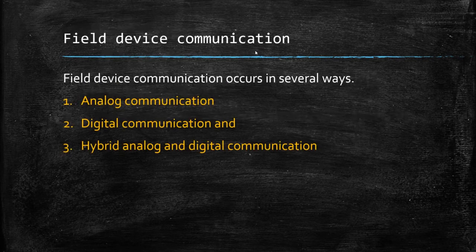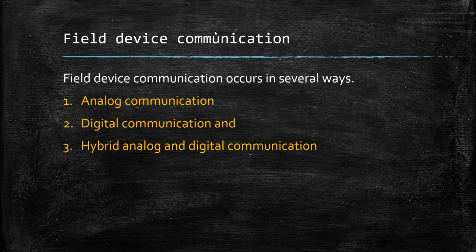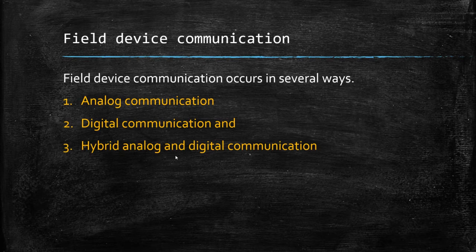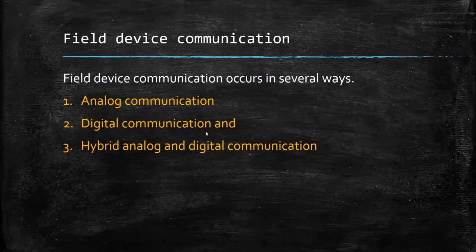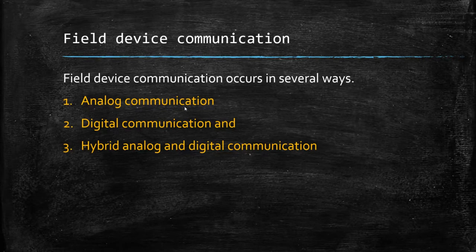Starting out with field device communication, since this is a communications course, we can identify that field device communication can occur in several different ways. We started out with analog communication back in the day, and this has evolved to digital communication today. We also have some that are a mixture — hybrid analog and digital. HART-type devices fall in here, where they have some components of an analog device and some components of a digital device. When addressing with HART, if you're using an address, it becomes digital; if you have an address of zero, it's analog.